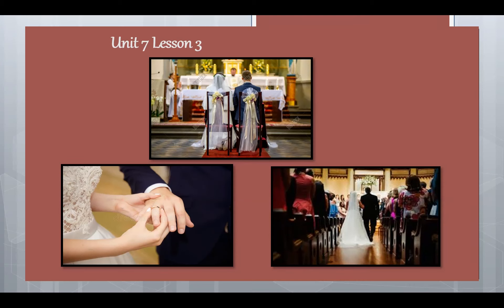In this unit there are some characters: Uncle Steward, Mary the bride, Jonathan the bridegroom, and his friend Marcus. In this part of the story, on the morning of Mary's wedding, Uncle Steward decided to fill up his beautiful car with petrol. While he was driving home, he looked up at the sky — black clouds were moving — and he got anxious.